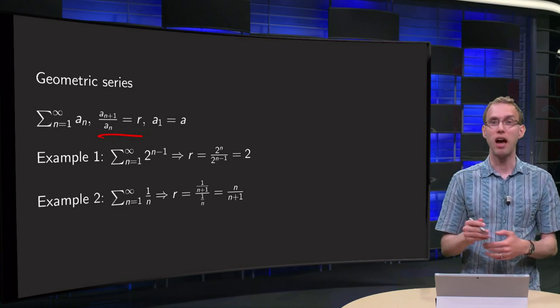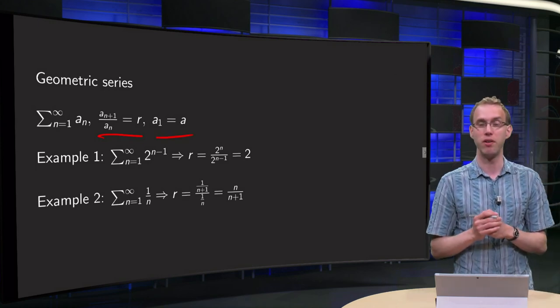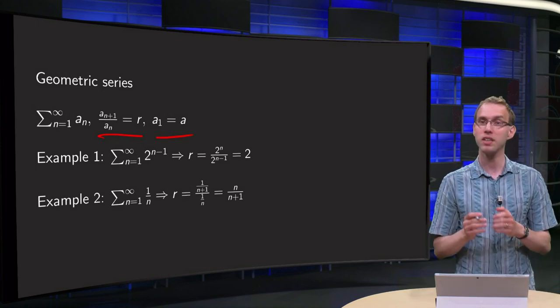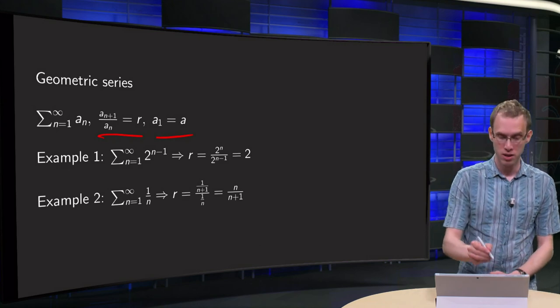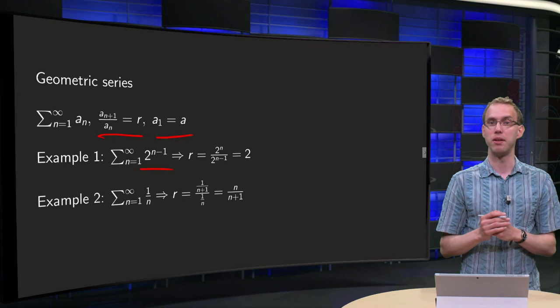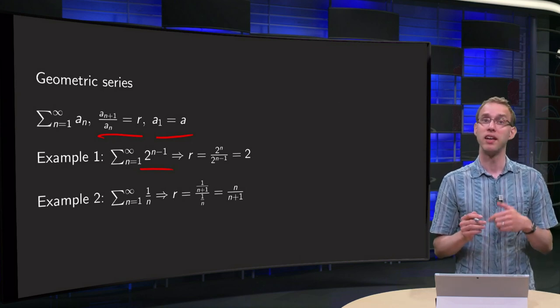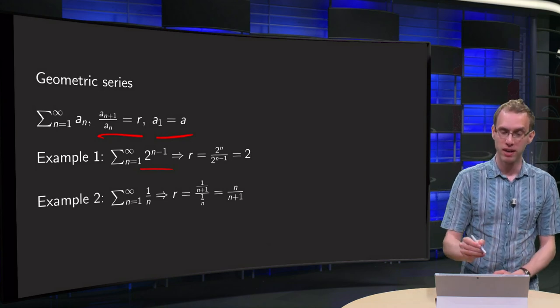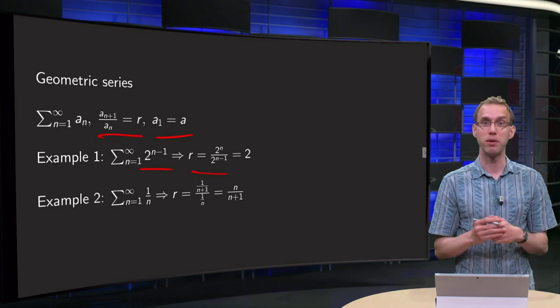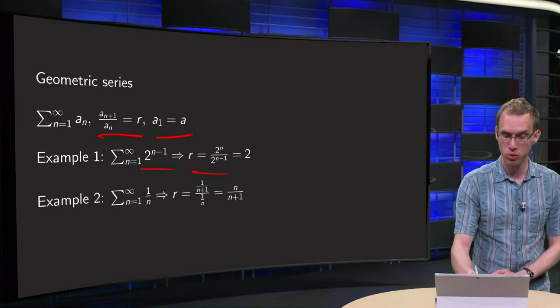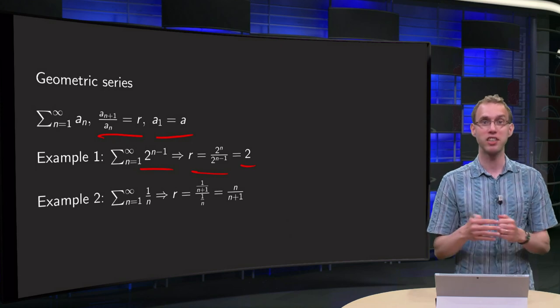We call this ratio r, and for convenience we call the first term of the geometric series a_1, we set it to a. Let's do some examples to see whether we have geometric series or not. Suppose we have this series 2^{n-1}, so a_n equals 2^{n-1}, then a_{n+1} equals 2^n, and if we compute this ratio we get 2^n divided by 2^{n-1} equals 2, which is independent of n, which means that we have a geometric series here.